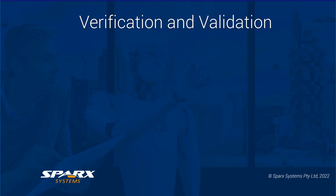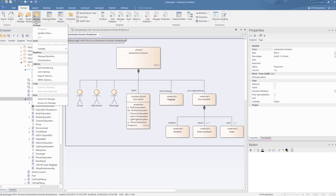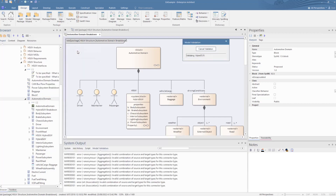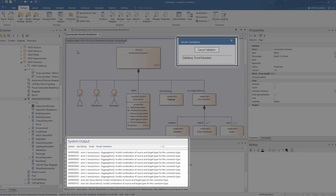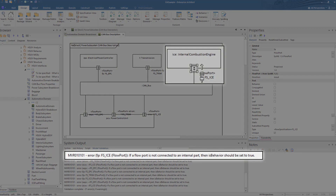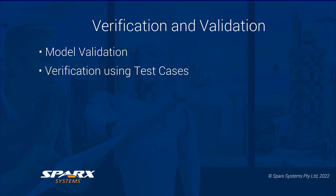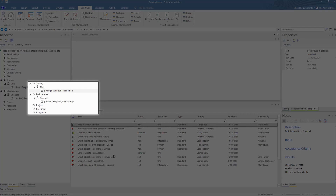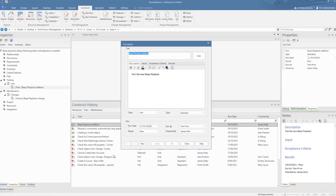An ongoing part of the design process is verification and validation of the model. Enterprise Architect provides a number of core options for these, including model validation, which supports checking for conformity to the modelling standards, starting with the underlying UML standards. When checking the HSUV model, there was an older SysML standard used pre-SysML 1.5, which is retained in this example. Being outdated, this is logged as an issue. On clicking on the entry in the system output, this gives us a visual reference to the port being flagged as an error. There are also basic test creation options for defining verification criteria, which can be tracked in the inspector view and the construct history view, with the option for logging the results of these checks.